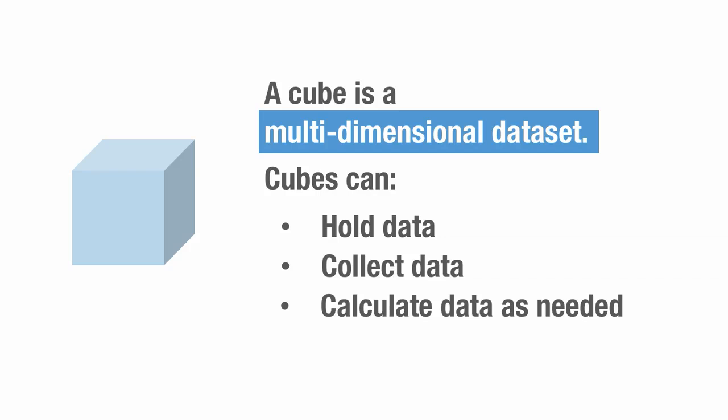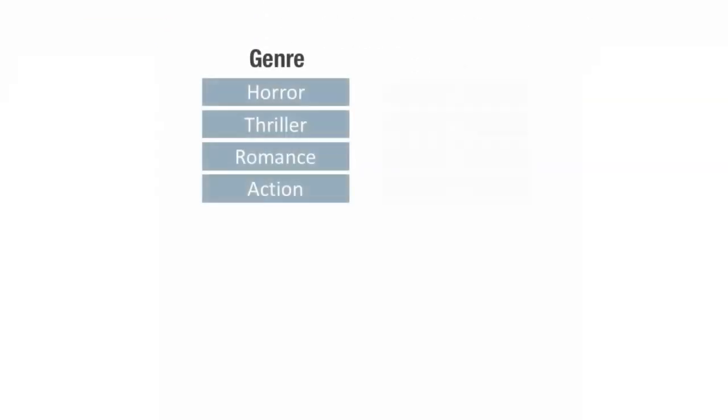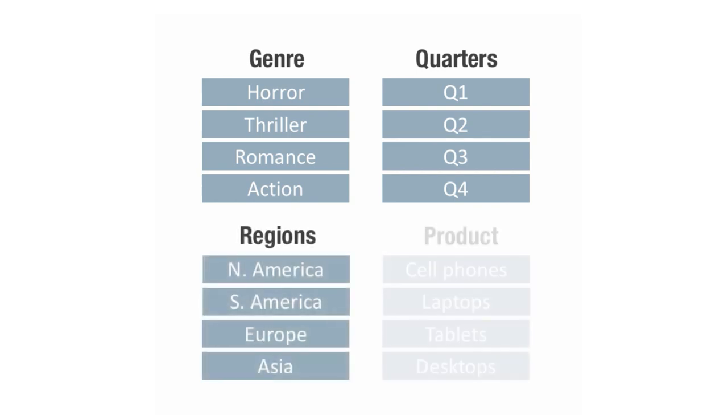Most of us can imagine a one-dimensional spreadsheet quite easily. You create one every time you create a list, like a list of book genres, quarters, regions, or products.